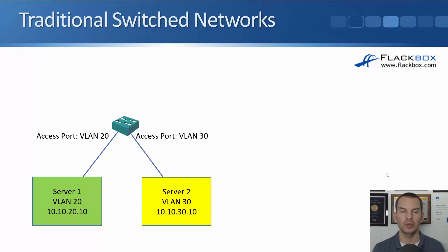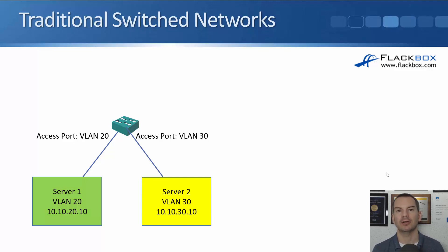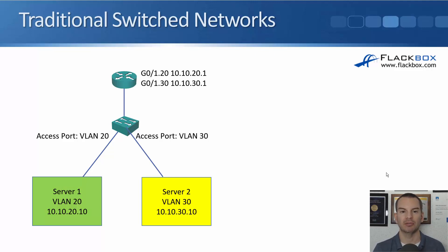On the switch, we configure the physical port connected to server 1 as an access port in VLAN 20, and the port connected to server 2 as an access port in VLAN 30. That gives us the Layer 2 setup. But since those two servers are in different Layer 3 subnets, we need a router for them to communicate.